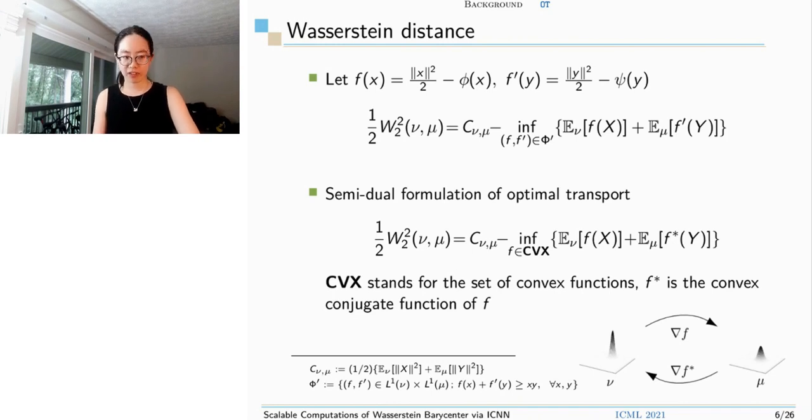Based on this formulation, we could derive the semi-dual formulation of optimal transport. It could be noticed that the optimal f' is achieved at f star, which is the convex conjugate function of f. And the optimal f is a convex function. This reduces the searching area for us. Also, a very important result is that the gradient of f star is the optimal map from mu to nu, and the gradient of f is the opposite direction map. This means once we solve the semi-dual problem, we get the bidirectional maps as well.